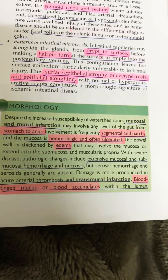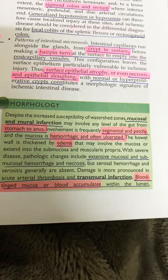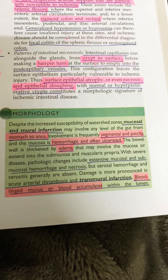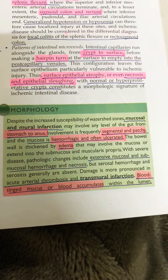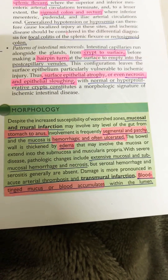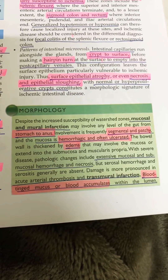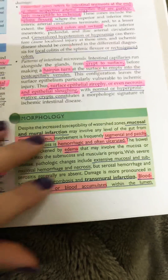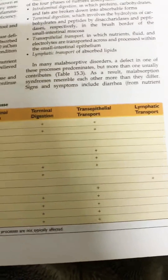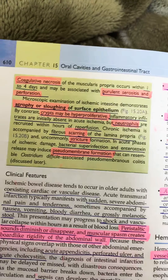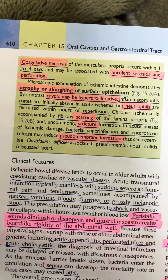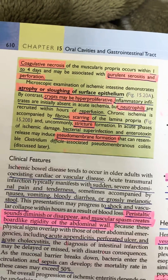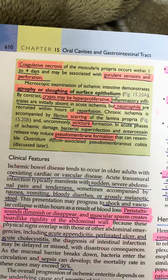The morphology shows that this injury can occur anywhere from the stomach to the anus. Involvement is segmental or patchy, with ulceration, hemorrhage, edema, and blood-tinged mucus or blood accumulating in the lumen. The muscularis propria will have coagulative necrosis, and there may be serositis and perforations. The crypts may be hyperproliferating due to immune responses.